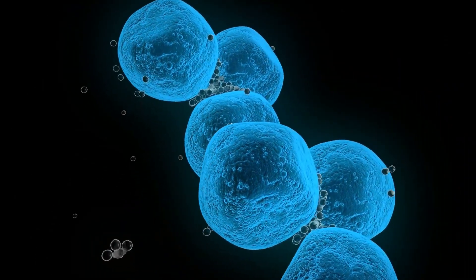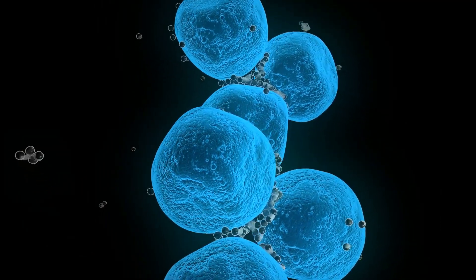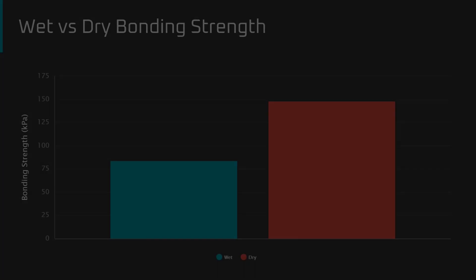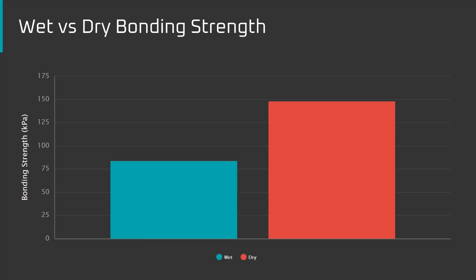How much stronger is DBE than an electrode painted with a wet slurry process? If the same active material mixture is used for a dry process and wet process and then compared, the result is that the dry formed electrode is over 50% stronger. That strength combined with the additional conductivity gives us a few options.